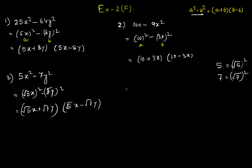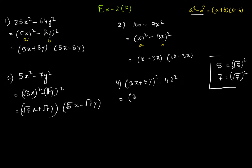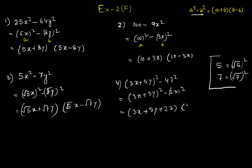Question 4 is (3x + 5y)² - 4z². This can be written as (3x + 5y)² - (2z)². Applying the formula, the factorization is (3x + 5y + 2z)(3x + 5y - 2z).